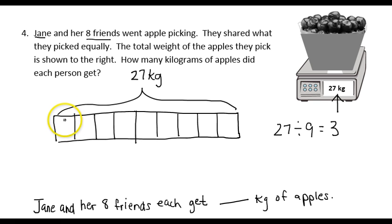I can start by giving each box 1 kilogram. So, that would be 1, 2, 3, 4, 5, 6, 7, 8, 9. So, I've used up 9 of my kilograms out of the 27. I can give each box another kilogram. When I do that, I've used up 18 of my kilograms. So, I can give each box yet another kilogram. Now I've used all 27 of my kilograms, and each person then gets 3 kilograms of apples. So, we'll include that in our answer statement. Jane and her 8 friends each get 3 kilograms of apples.